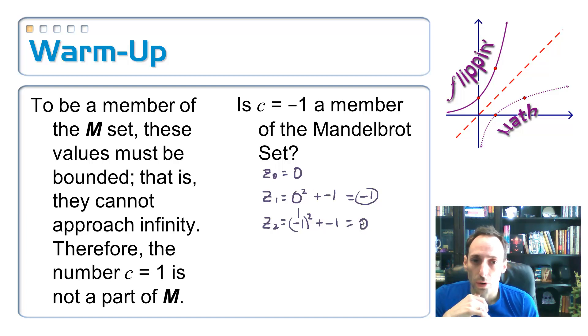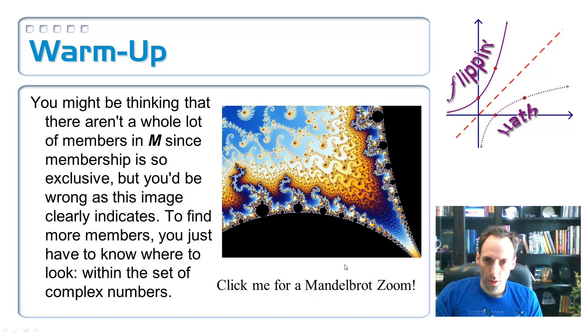Well look, I got my zero back again. So if I plug that thing in, Z sub three is going to be, I'm going to plug this answer back in, zero squared plus negative one. It's going to give me negative one again. Can you see how I'm just going to go back and forth between zero and negative one? If you can, then you can conclude that the number negative one is an element or is a member of the Mandelbrot set. And that's pretty cool.